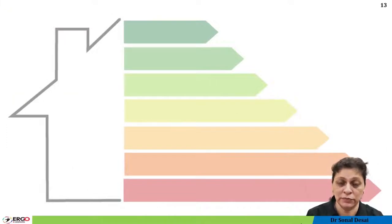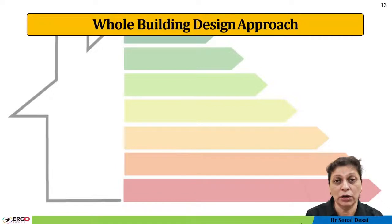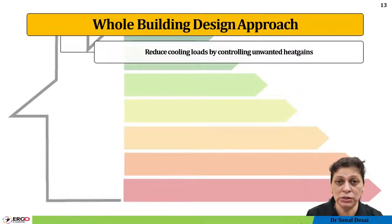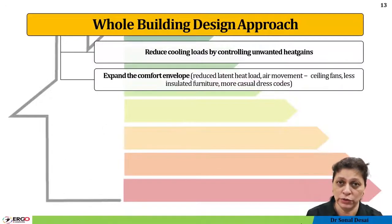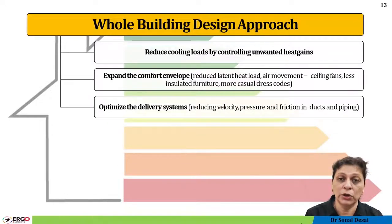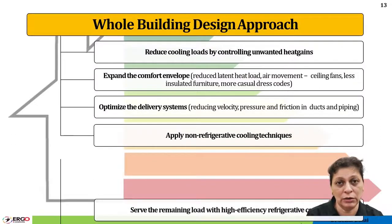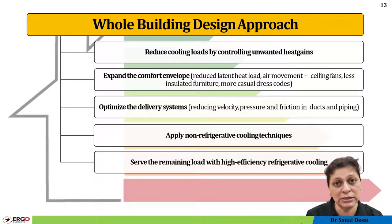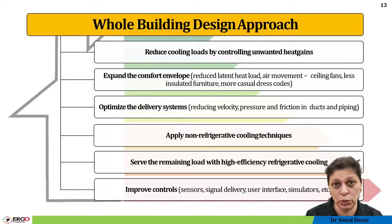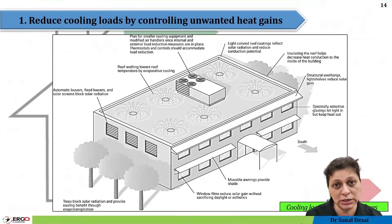HVAC is the system that consumes the highest energy in any building. The second part focuses on what possible measures can reduce energy consumption. A whole building design approach is considered, treating the building as a single system to reduce overall energy consumption. Different methods of achieving this whole building design are depicted in this video series.